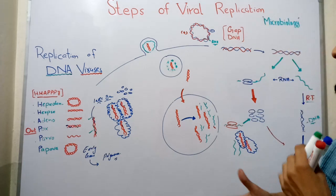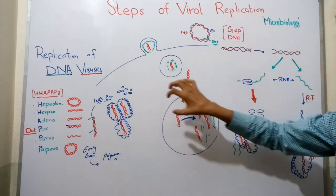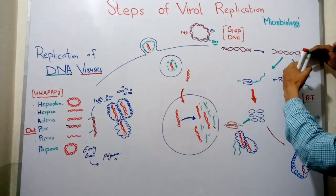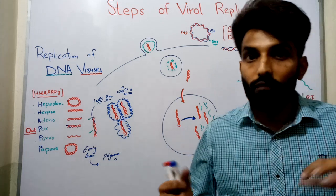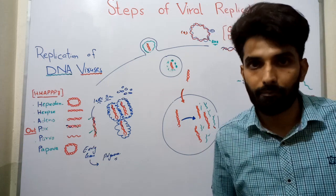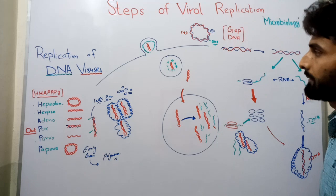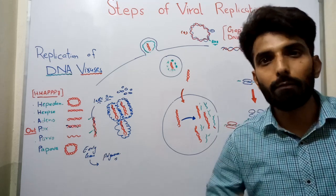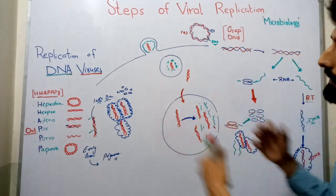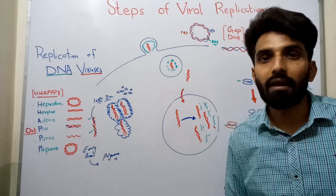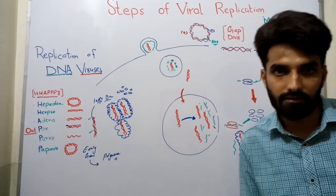So in this way, double-stranded DNA viruses can replicate. They can replicate outside the cytoplasm, inside the nucleus, or via an intermediate RNA step. There is also another possibility — if a DNA is single-stranded DNA. The replication of single-stranded DNA will be explained in the next video in detail. This was the replication of double-stranded DNA viruses. Thank you so much.